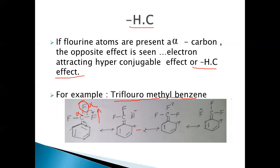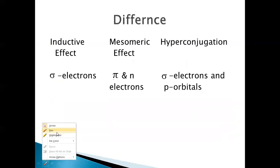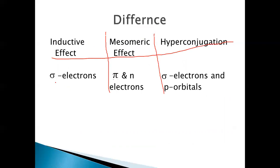There are four resonance structures possible for trifluoromethylbenzene. The major difference between inductive effect, mesomeric effect, and hyperconjugation: in inductive effect, sigma electrons transmit the effect through bonds; in mesomeric effect, pi and lone-pair electrons participate in resonance; in hyperconjugation, sigma electrons and p orbitals participate in resonance. Hyperconjugation is essentially an extension of the mesomeric effect and in most cases is opposite to it.